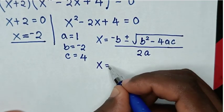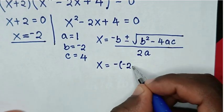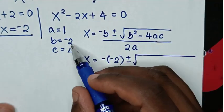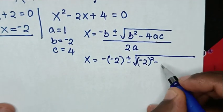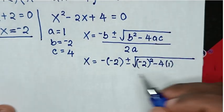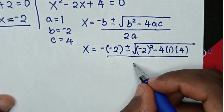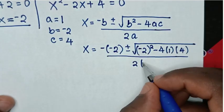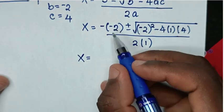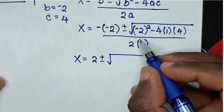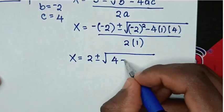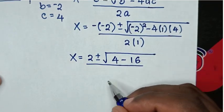Then x will be equal to: negative b is -(-2), plus or minus square root of b² — b is -2, so (-2)² — minus 4 times a, a is 1, times c, c is 4, over 2 times a, a is 1. That gives x = 2 ± √(4 - 16) over 2, which is 2 ± √(-12) over 2.